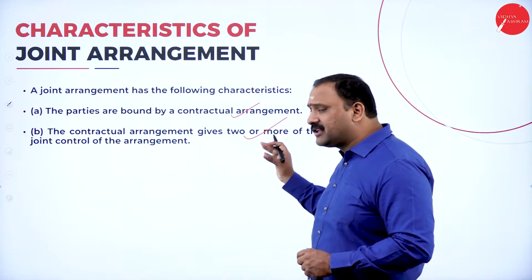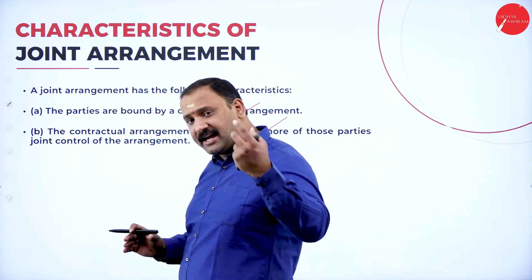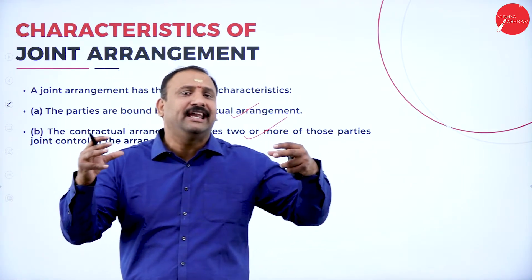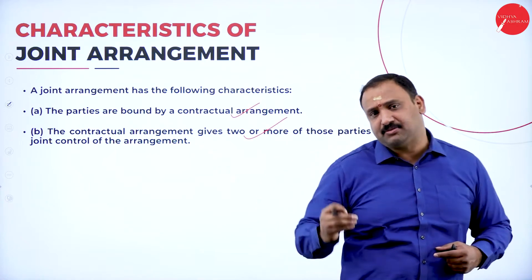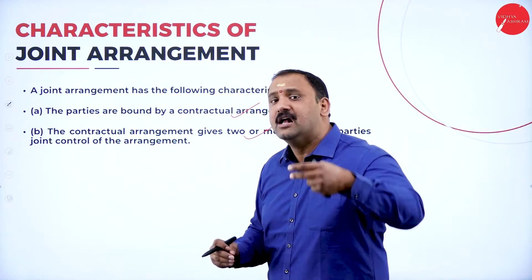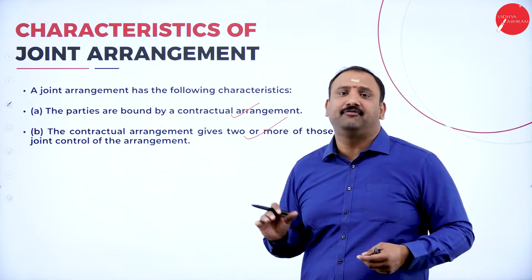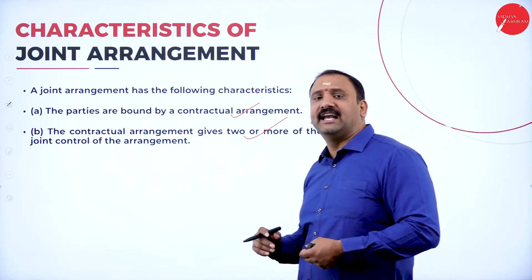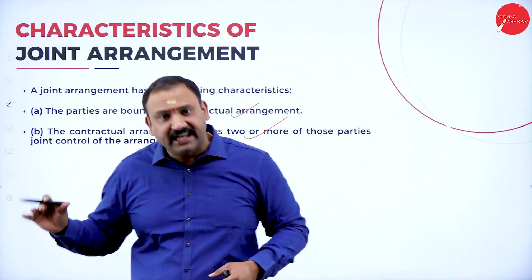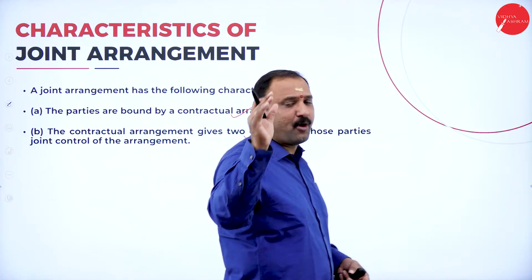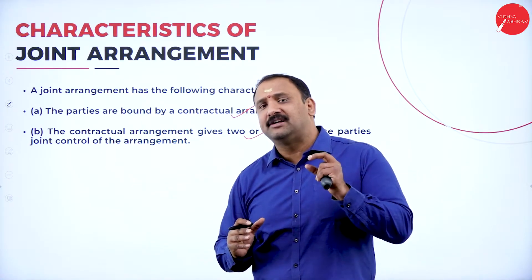There might be cases where three or more, or five or more, people are jointly engaged in a business. But the joint arrangement factor states clearly that at least two people out of the five or six or three should have control over the arrangement. Two people should be actively present, morally controlling the organization, and directing what needs to be done — that is where the control factor comes into picture.